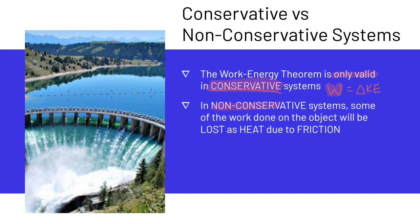In non-conservative systems, some of the work done on the object will be lost as heat due to friction. So if we look at the equation, work equals the change in kinetic energy plus the force of friction. Some of this work gets lost as friction when we have friction in the system.